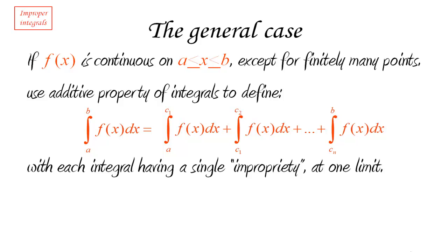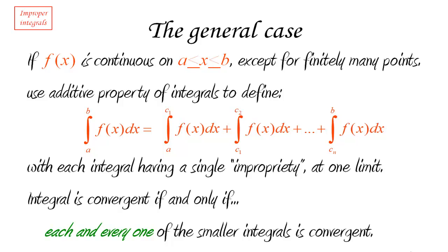Now, once we've done this, once we've split our integral into all of these pieces, each of which only has one problem at one limit, then we're going to say that the integral is convergent if and only if—and here the situation, the requirement is quite stringent—we need each and every one of the smaller integrals to be convergent. So what we must check is that each and every one of those integrals is convergent. If it is, then the value of the integral is going to be equal to the sum of the values of all the integrals.